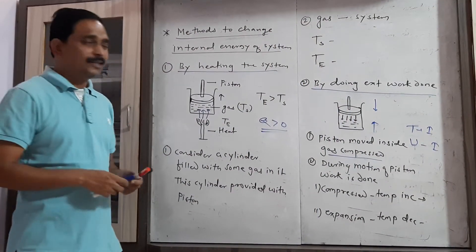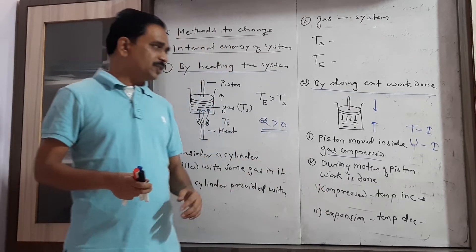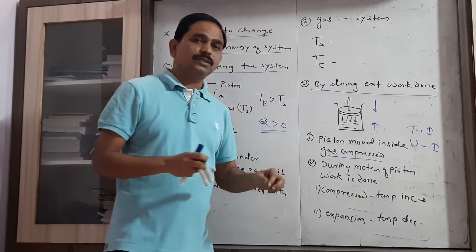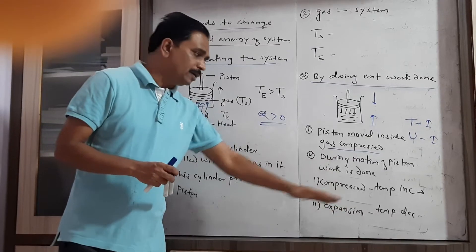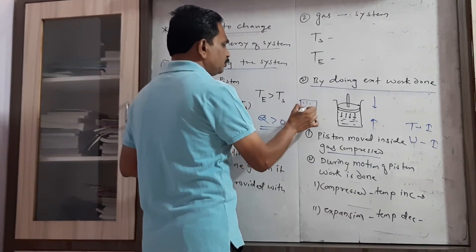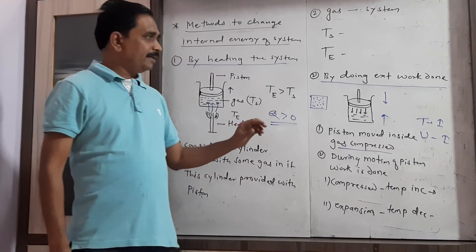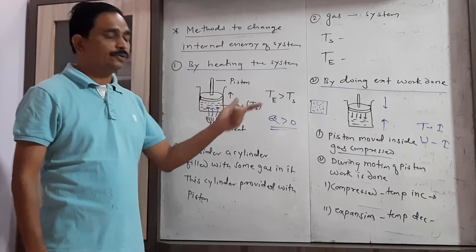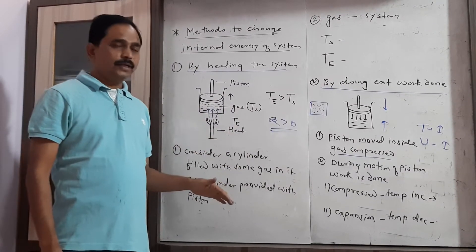The opposite is also the case: when the piston moves in the upward direction, the gas expands, volume increases, temperature decreases, and internal energy decreases. Why does temperature increase during compression? Because as gas molecules are compressed, they are closer together, collisions between gas molecules increase, and because of increasing collisions, the temperature also increases. When temperature increases, internal energy increases; when temperature decreases, internal energy decreases.